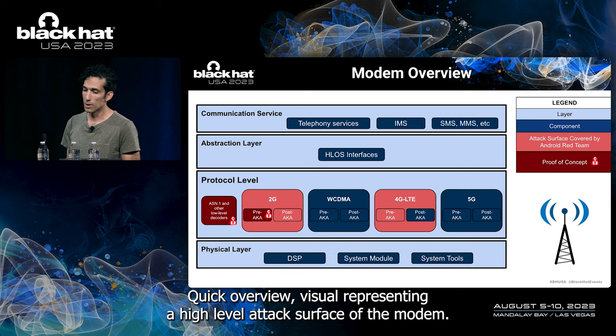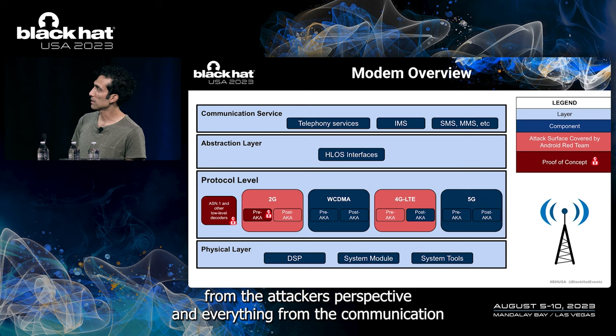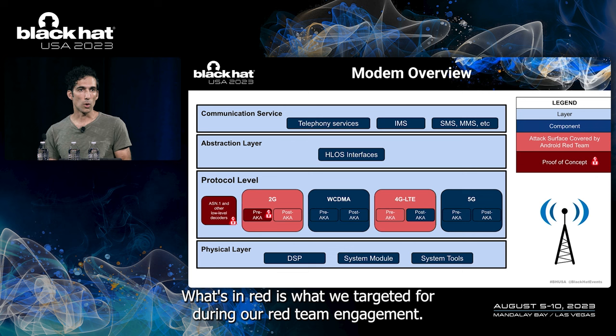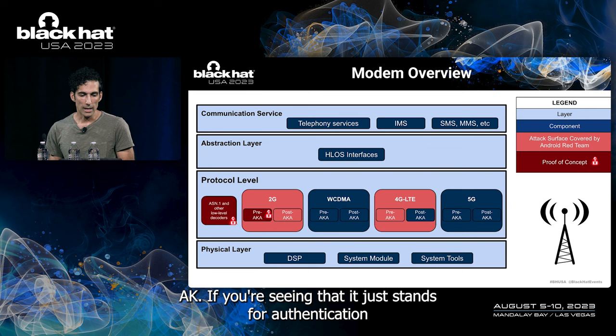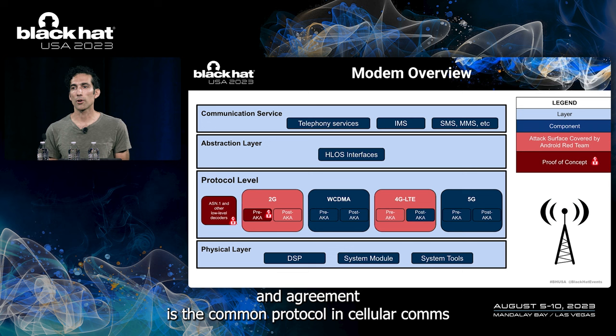Here's a high-level visual of the modem attack surface. In blue are the different layers and components from an attacker's perspective, from the communication layer down to the physical layer. In red is what we targeted during our red team engagement. Dark red are areas we specifically exploited — the pre-authentication attack surface in 2G, as well as lower-level decoders such as ASN.1 — AKA authentication and key agreement — a common protocol in cellular communications supporting mutual authentication between a device and the carrier.